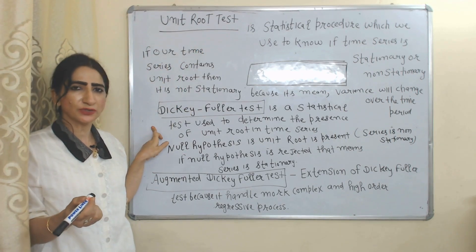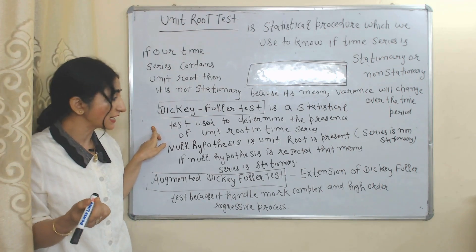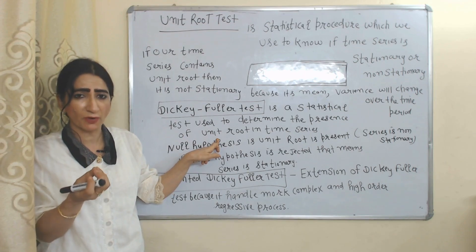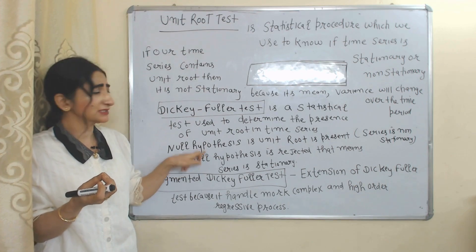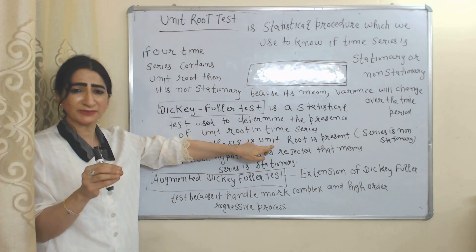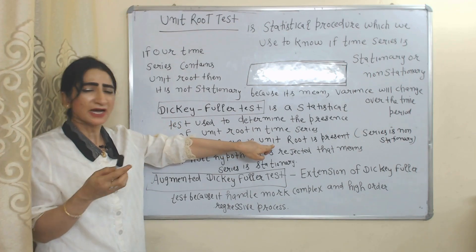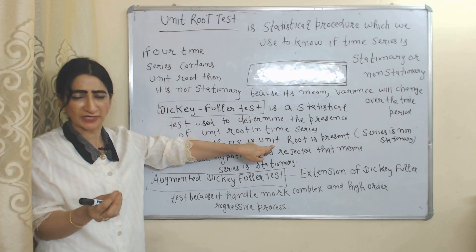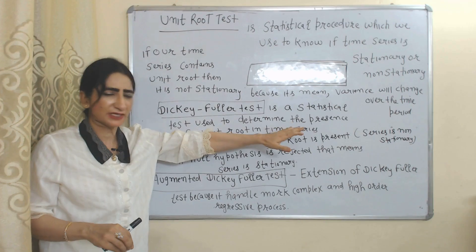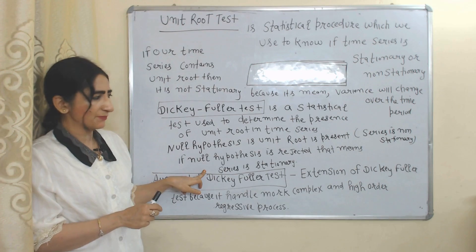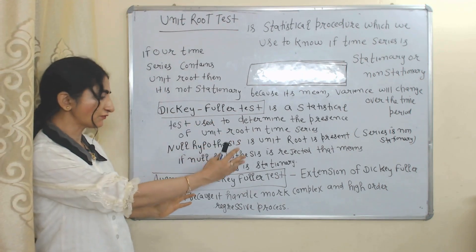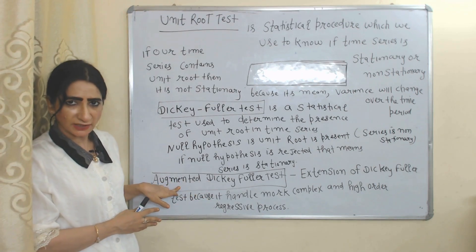The Dickey-Fuller test and the augmented Dickey-Fuller test are types of unit root test. We use the Dickey-Fuller test to know the presence of a unit root in our time series. The null hypothesis in the Dickey-Fuller test states that the unit root is present — that is, the time series is non-stationary. If you accept the null hypothesis, a unit root is confirmed and the series is non-stationary; if you reject it, the time series is stationary.